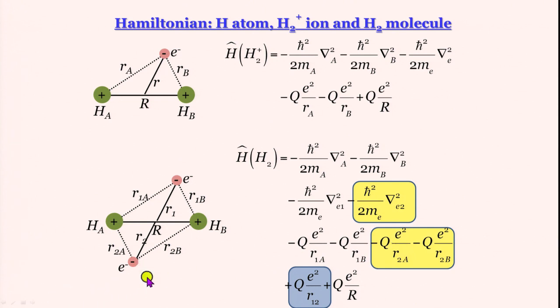Then we are going to have the term for potential energy for attraction of the second electron by nucleus A. Another term for electrostatic attraction between the second electron and nucleus B.